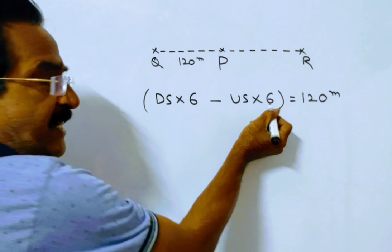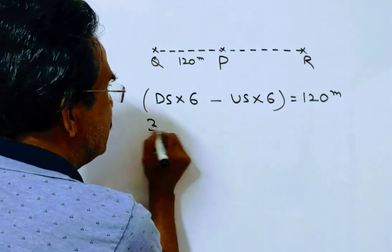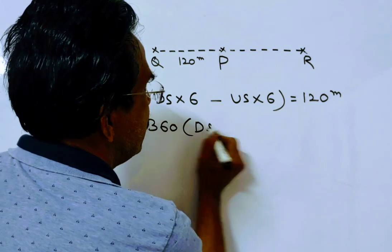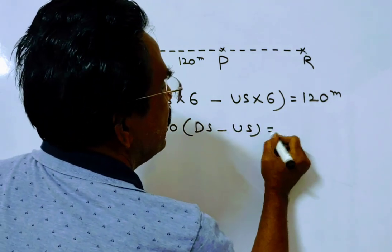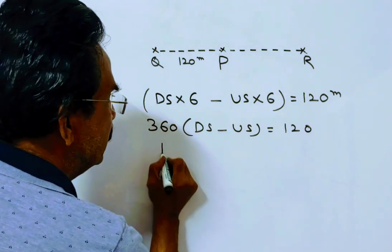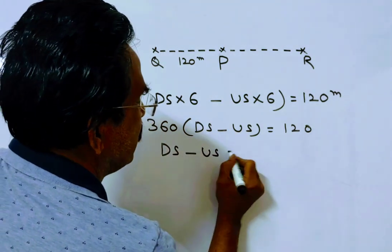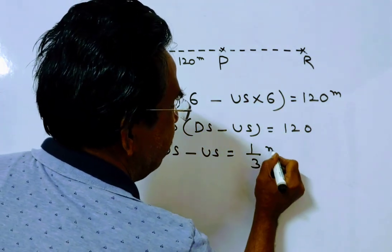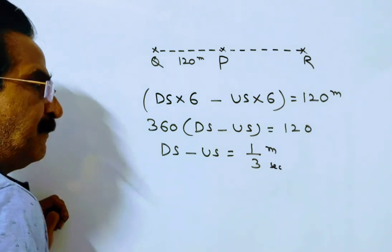6 minutes means 360 seconds. So: 360 into ds minus upstream velocity equals 120. Therefore, downstream velocity minus upstream velocity equals 120 by 360, which is 1/3 meters per second.